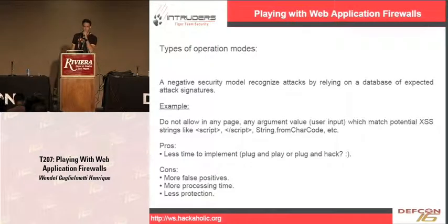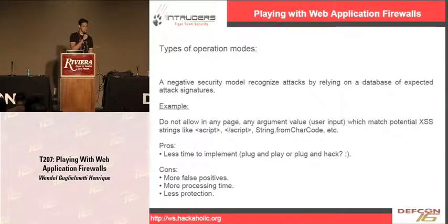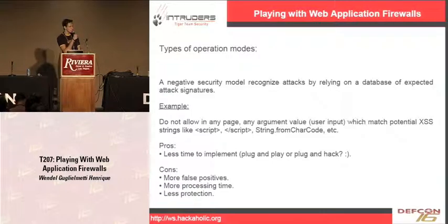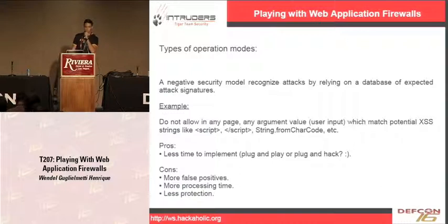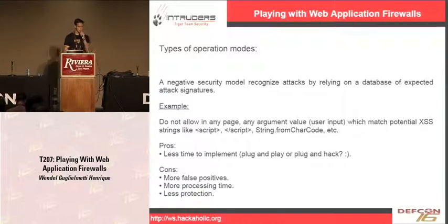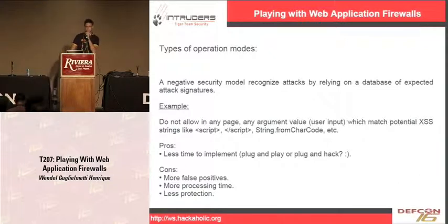The negative security model recognizes attacks by relying on a database of expected attack signatures, like most of the IDS and IPS systems we have today on the market. For example, look for any page or argument where user input matches any potential cross-site scripting strings, like string.fromCharCode and a combination of all these strings.